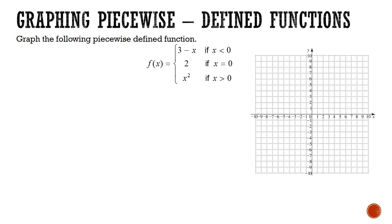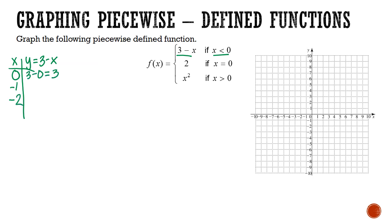Let's do one more example together. This piecewise defined function actually has three pieces to it. I really recommend stopping the video, trying to work this out on your worksheet by yourself, and then restarting to check your work — if you haven't done it right, you can see where you made your mistakes. The best way to learn math is by doing it yourself. So let's start with the first piece, 3 minus x, for x values that are less than 0. We'll start at 0 and choose other values less than 0, like negative 1 and negative 2.